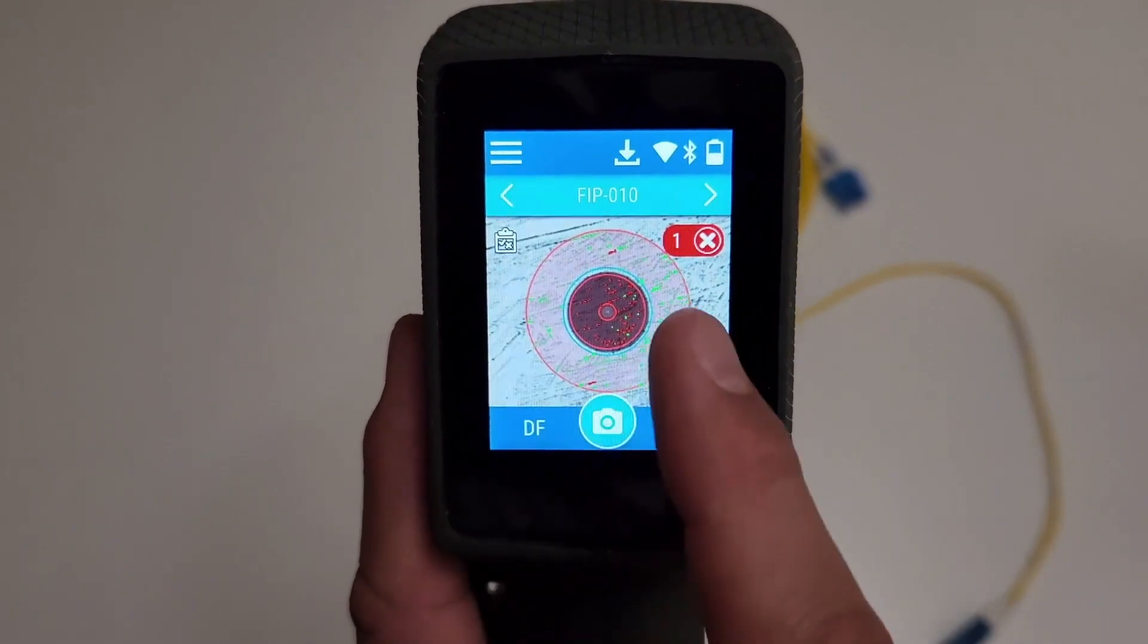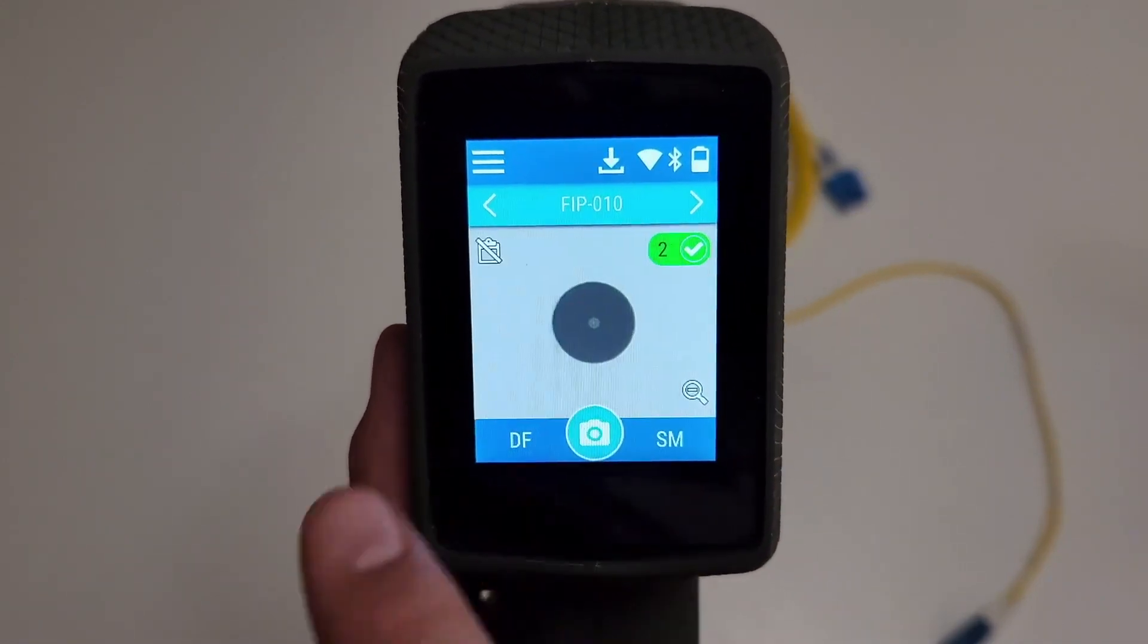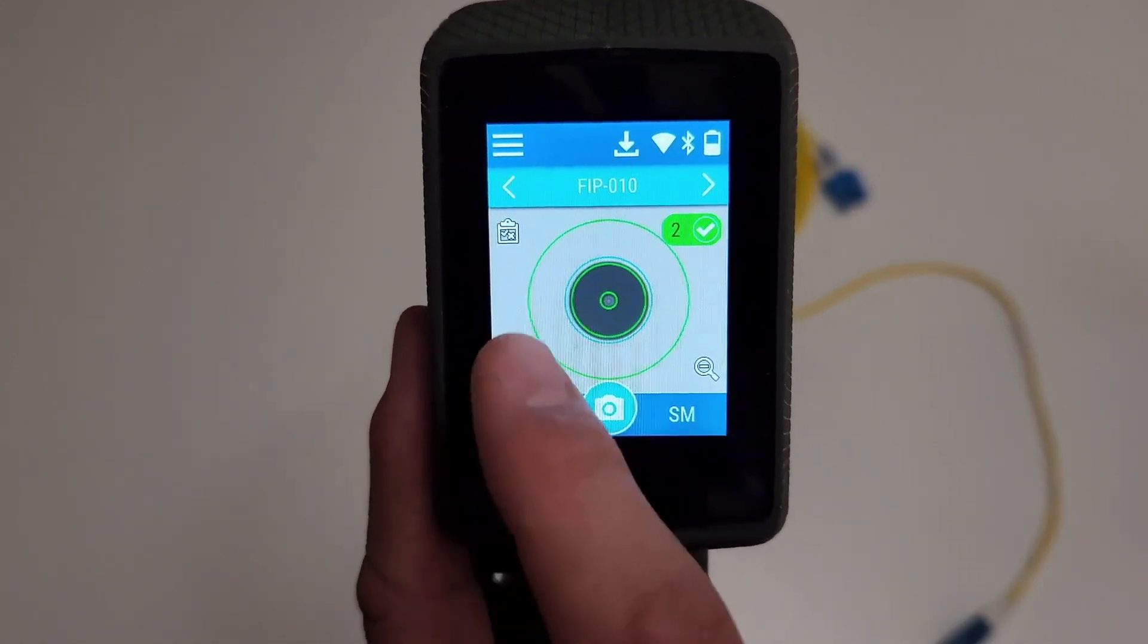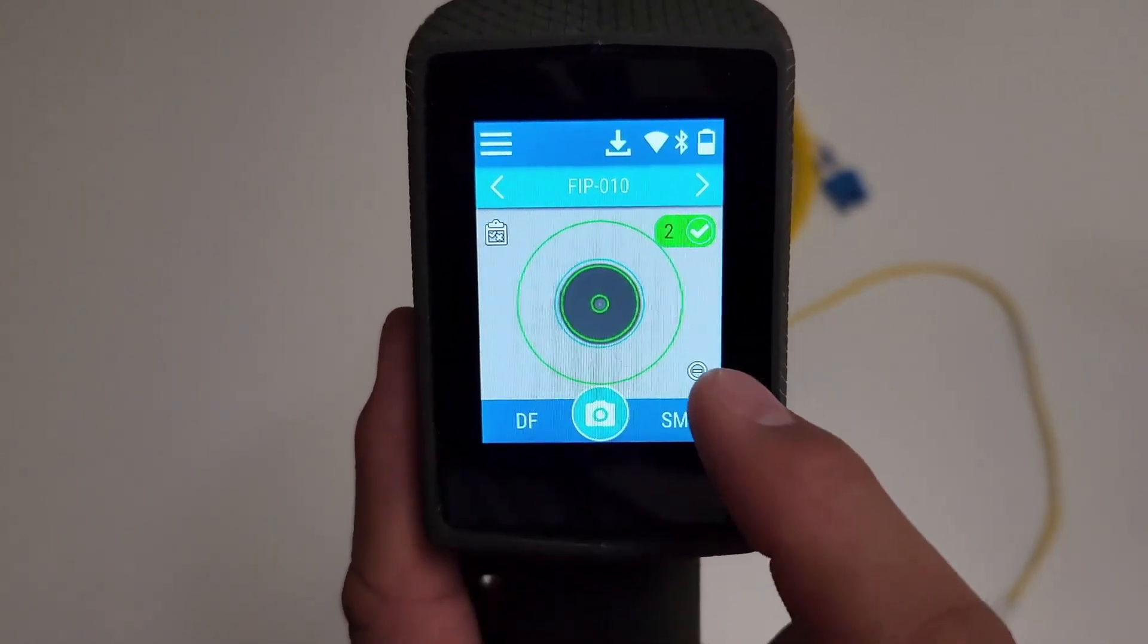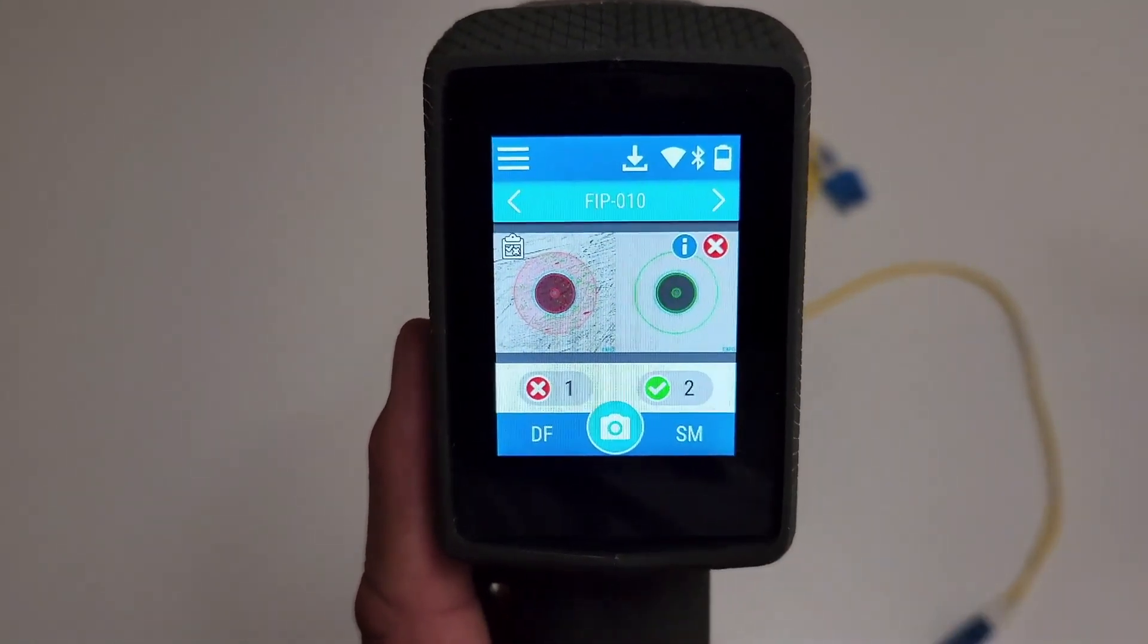Swiping your finger on the touch screen at this point allows you to toggle between each fiber individually. Now to return to the full view of the two fibers, select the zoom out feature and navigate further.